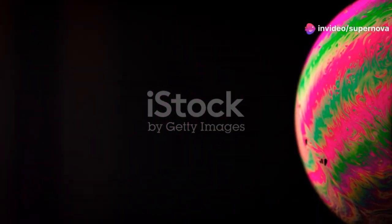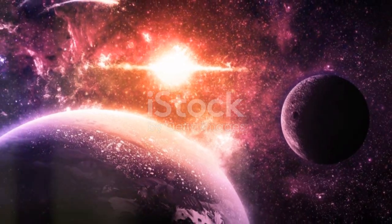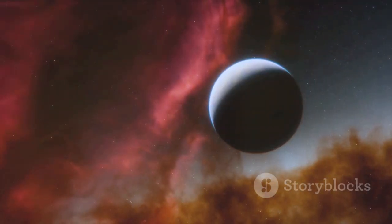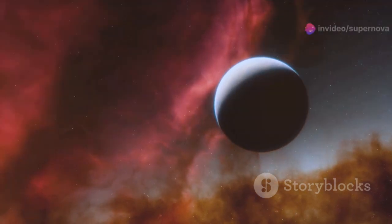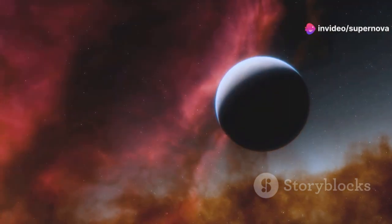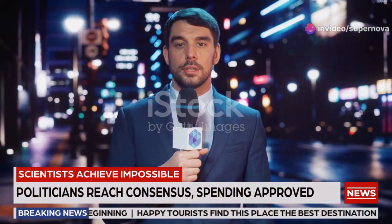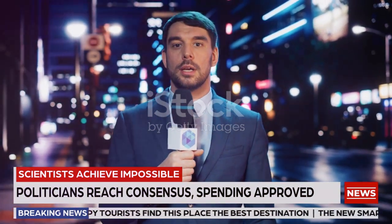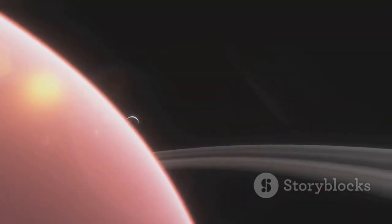It's a rocky planet, like Earth, with a solid surface that could potentially support life as we know it. It orbits within Proxima Centauri's habitable zone, the region around a star where conditions might be just right for liquid water to exist. This means that the temperature on Proxima b might be just right for liquid water to exist on its surface, a key ingredient for life. This is a very exciting discovery.